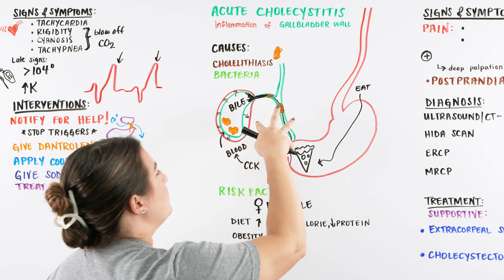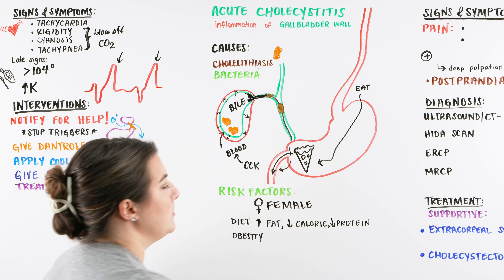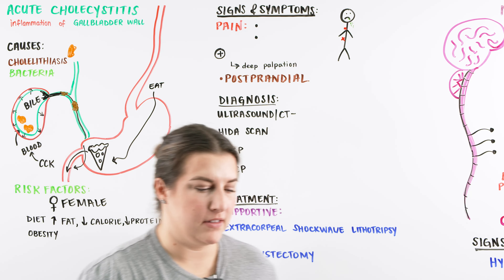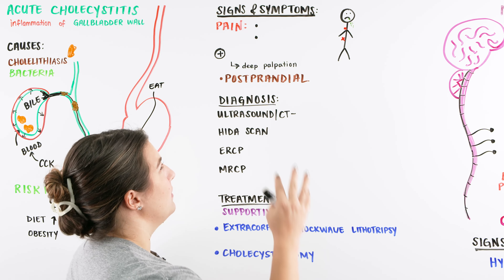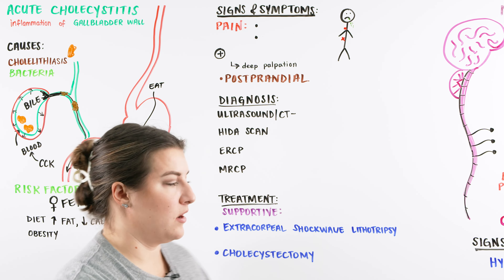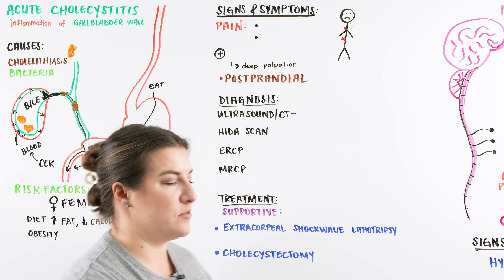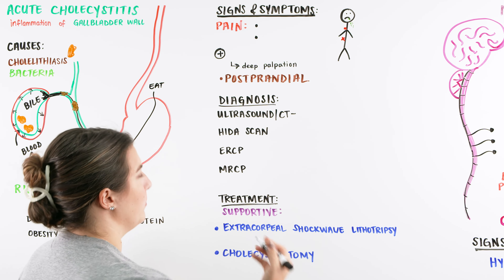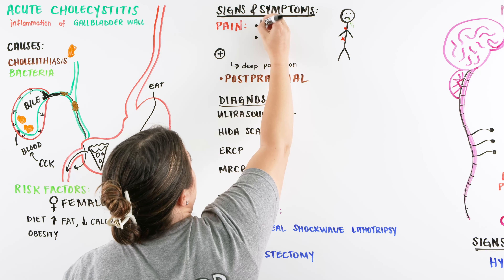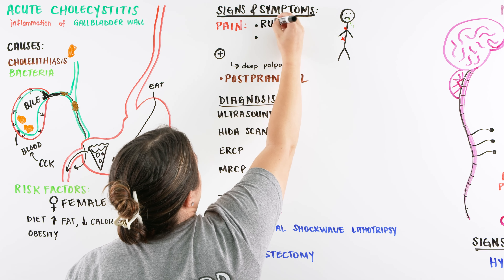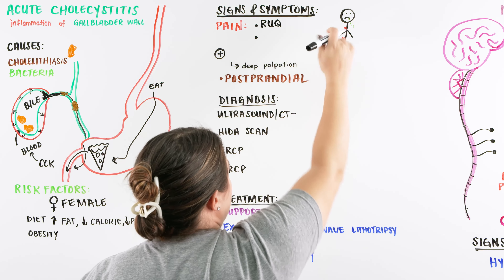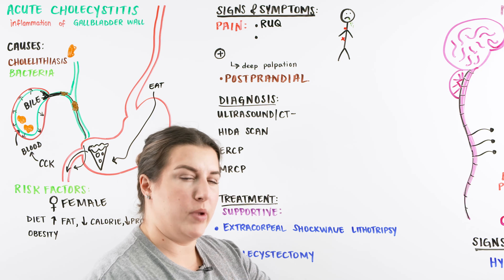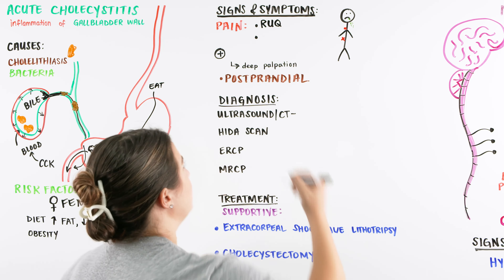When we have this blockage, we're going to exhibit a lot of symptoms. A patient coming in with acute cholecystitis can have pain in the right upper quadrant, where the gallbladder is located on the underside of the liver. Sometimes they can even have referred pain that goes to their shoulder or their scapula.